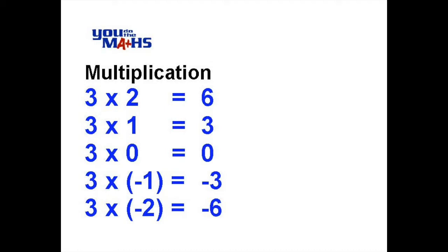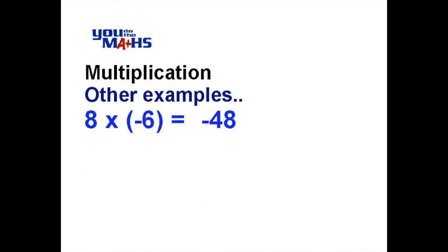Let's have a look at a few other quick examples. 8 multiplied by 6 is equal to 48, so 8 multiplied by negative 6 according to the pattern we've just seen must be negative 48. 9 multiplied by 5 is 45, so negative 9 multiplied by 5 is negative 45.